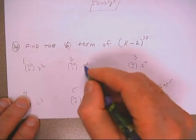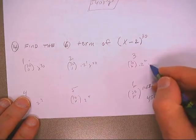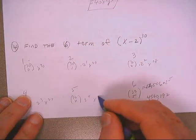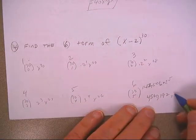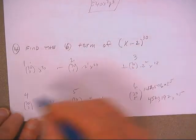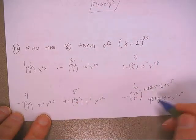x^30, x^29, x^28, x^27, x^26, x^25. Negative, plus, minus, plus, minus, plus, minus. There's your answer.